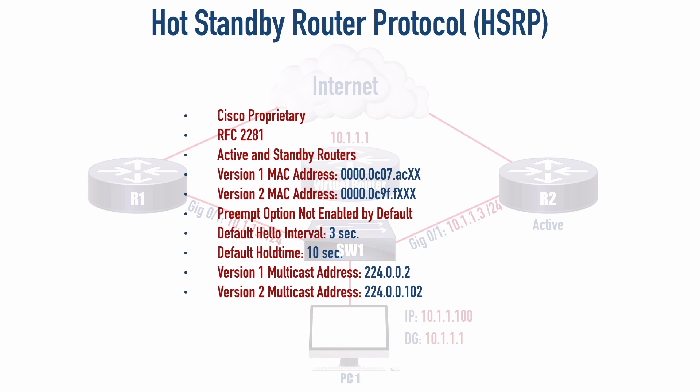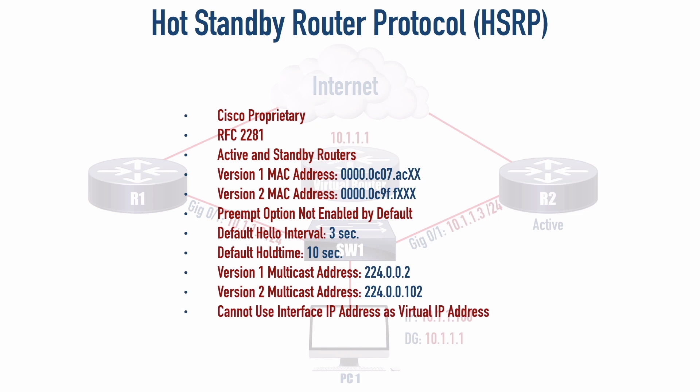Something else to be aware of: with HSRP, the virtual router's IP address — in this case 10.1.1.1 — cannot be the same IP address assigned to one of our router interfaces. R1 or R2 couldn't have 10.1.1.1 as the physical interface's IP address. That's different with VRRP, which is why it's worth noting here. We cannot have an interface's IP address equal the virtual IP address.